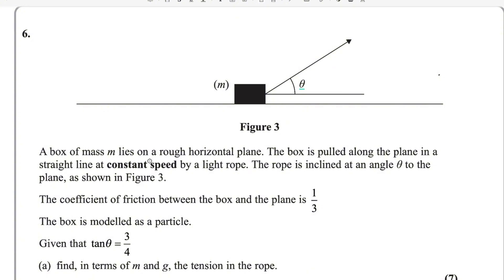A box of mass M lies on a rough horizontal plane. The box is pulled along the plane in a straight line at constant speed by a light rope. The rope is inclined at an angle theta to the plane as shown in figure 3. The coefficient of friction between the box and plane is 1/3. The box is modeled as a particle, given that tan theta equals 3/4. Find in terms of M and G the tension in the rope.